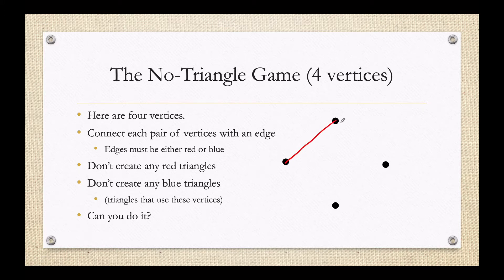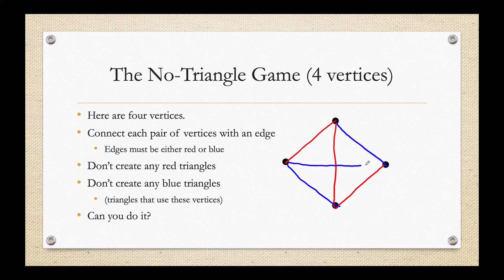You can try it on your own if you want — pause the video. I bet I can work through it pretty easily. Maybe I connect these guys with red. I don't want to connect these over here with red because they'd give me a triangle, so maybe I switch colors. I still need to connect the remaining vertices. I believe I've now connected all pairs of vertices with either red or blue, without creating any red or blue triangles. So I've won the no triangle game on four vertices.